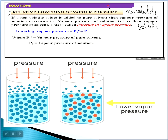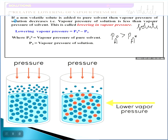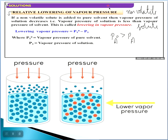You can see here: when a non-volatile solute is added to pure solvent, the vapor pressure of the solution decreases. The vapor pressure of the solution is less than the vapor pressure of the pure solvent. After adding the solute particles, vapor pressure will be high for the pure solvent and less for the solution, because the solute particles hinder and don't allow the solvent particles to vaporize easily.